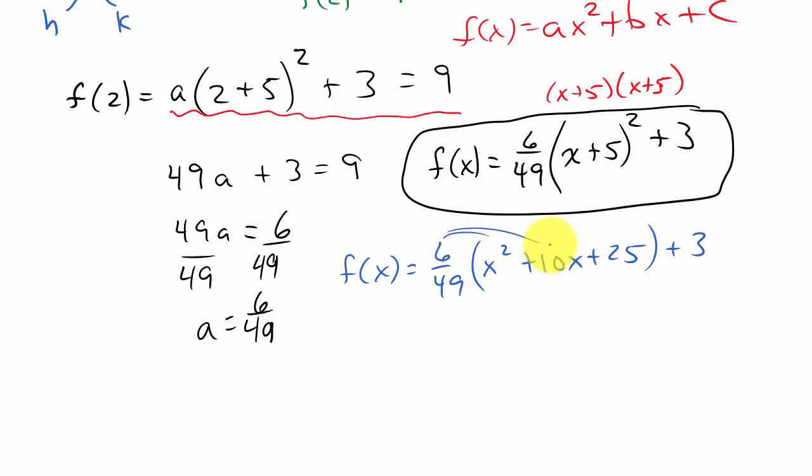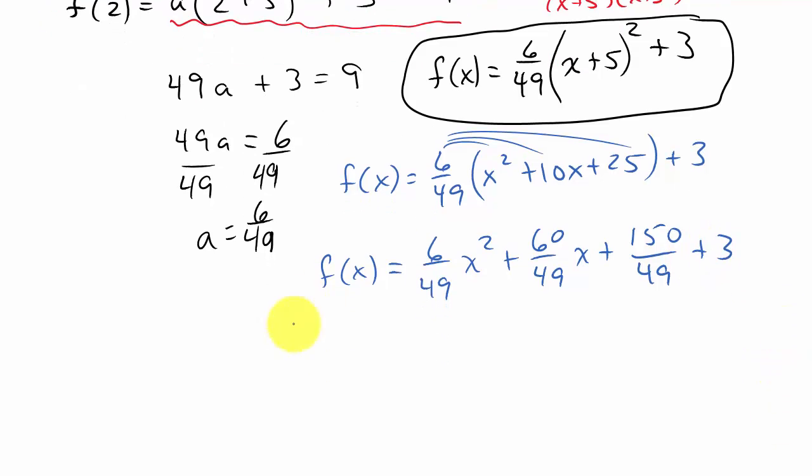Okay. And then I would just distribute. So f of x is equal to 6 over 49 x squared plus 60 over 49 x plus, and then let's see, that would be 25 times 6. So that would give me 150 over 49 plus 3. And so f of x would be 6 over 49 x squared plus 60 over 49 x plus, and then 150 plus 3. Well, that would be 150 over 49 plus 3. So I would have to get a common denominator. So 49 times 3, that's 147. And then add that to 150. That would be 297 over 49.